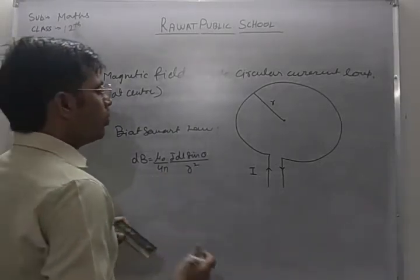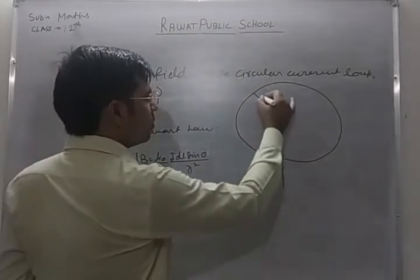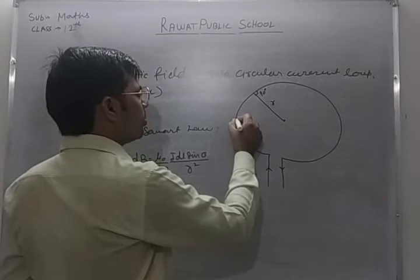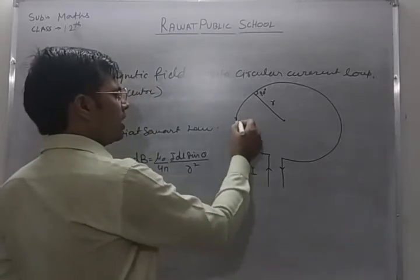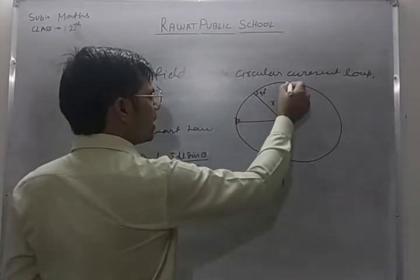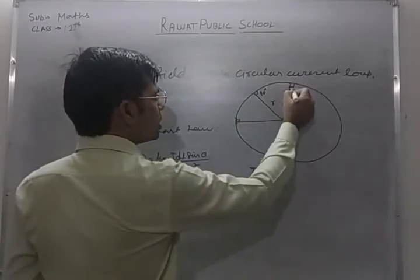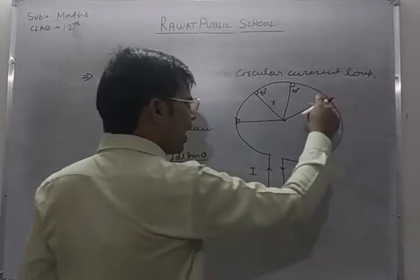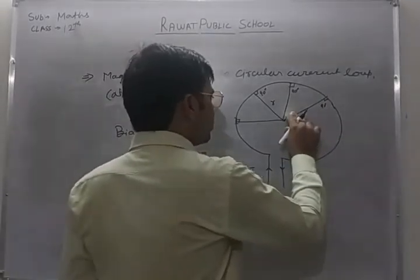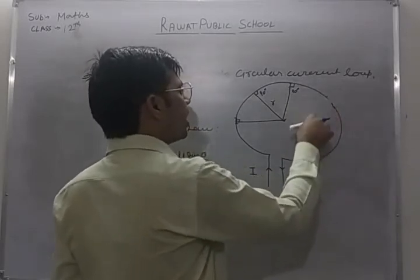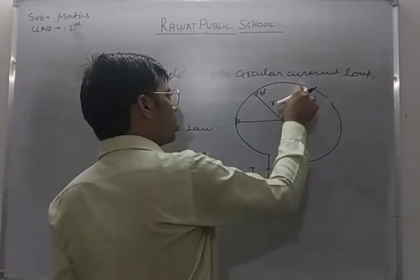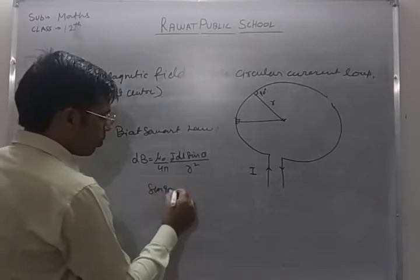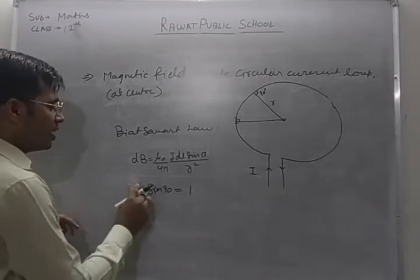The center of the loop subtends an angle of 90 degrees at all points of the current-carrying element. Whether the current-carrying element is at this point, here, or at any other point on the loop, the center will always subtend a 90 degree angle. Therefore, sinθ = sin90° = 1.